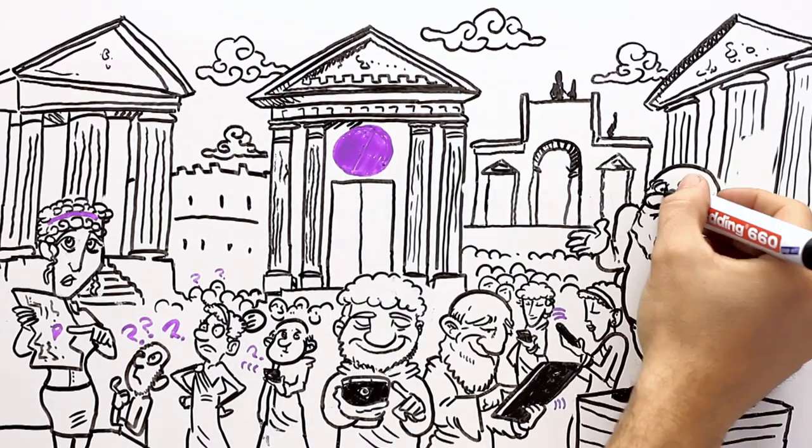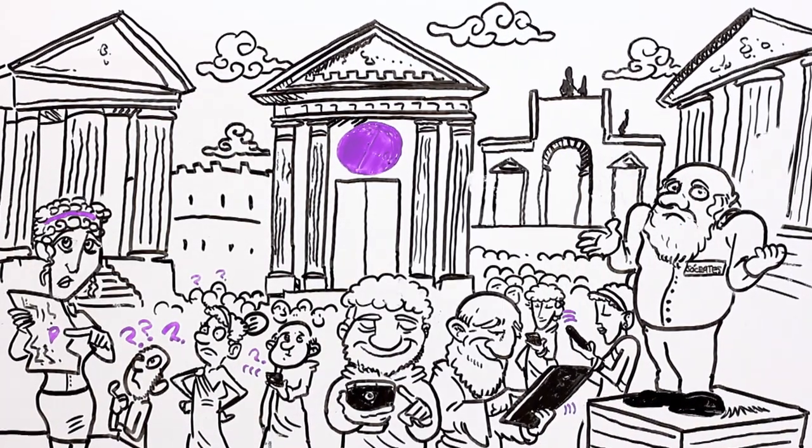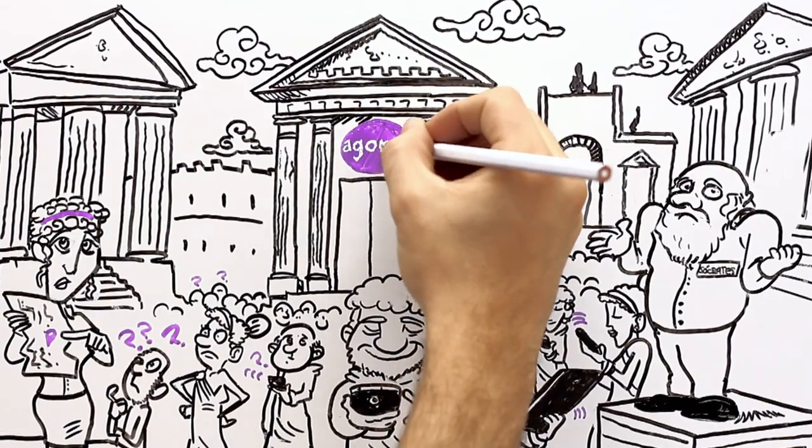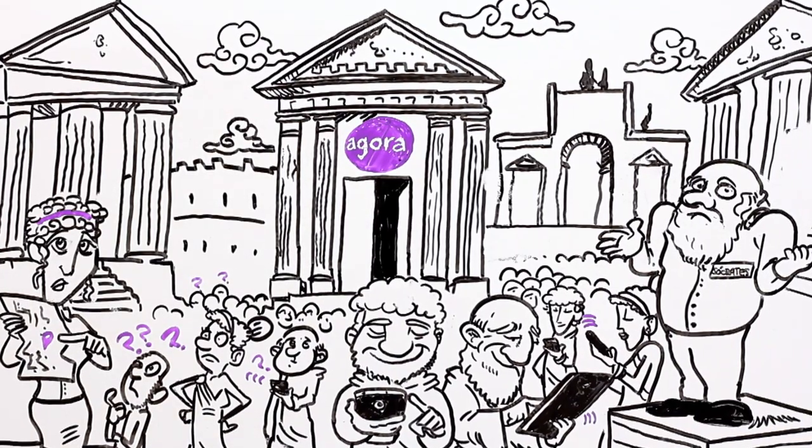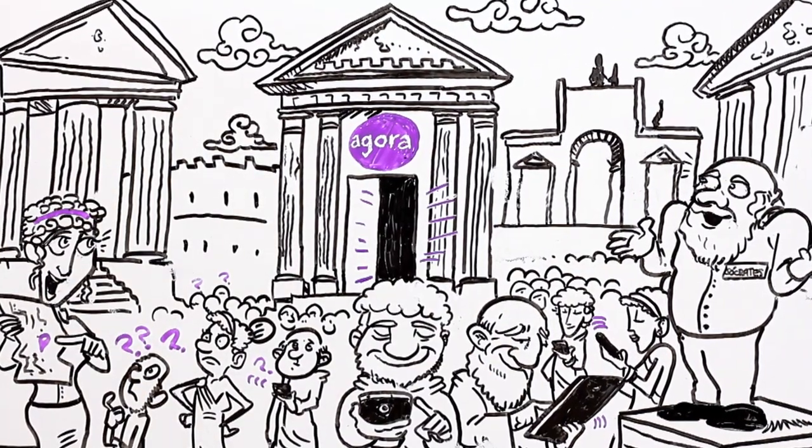Just as they are getting tired of surfing without success, Socrates and Myrto discover Agora, the new great information portal so many were waiting for.